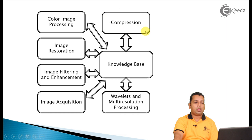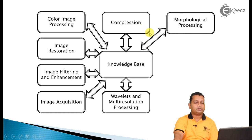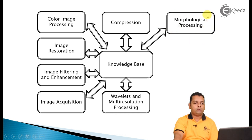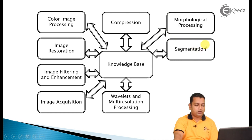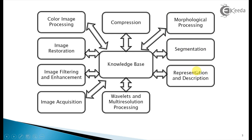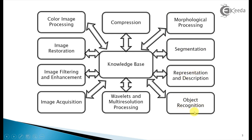A very familiar example of image compression is the JPEG image format. The next fundamental step is morphological processing. Morphology basically deals with shape, and morphological processing techniques have many applications in image processing. It is followed by segmentation, then representation and description, and finally object recognition.